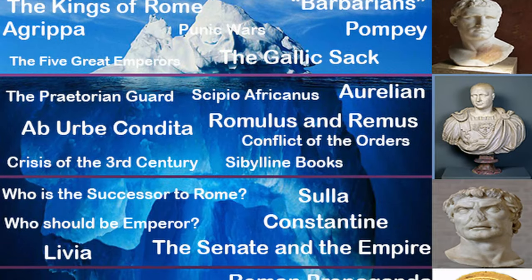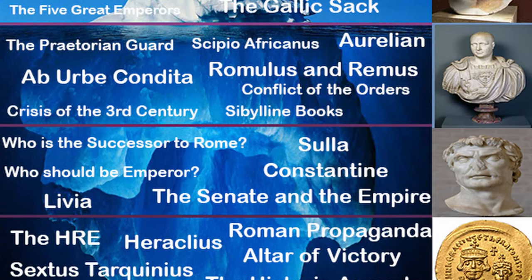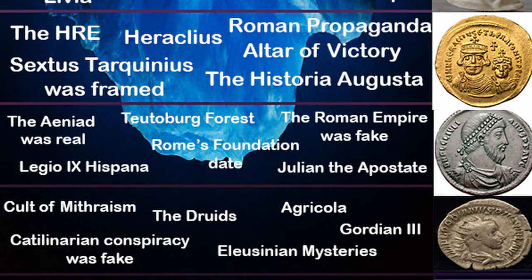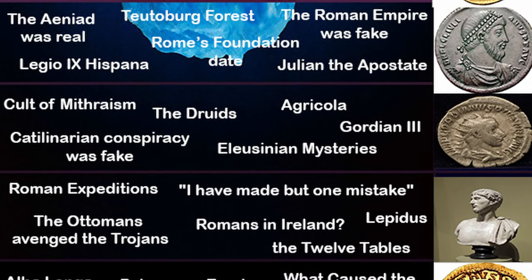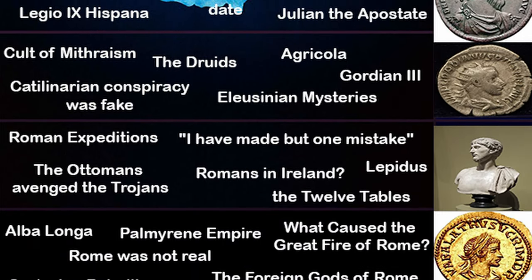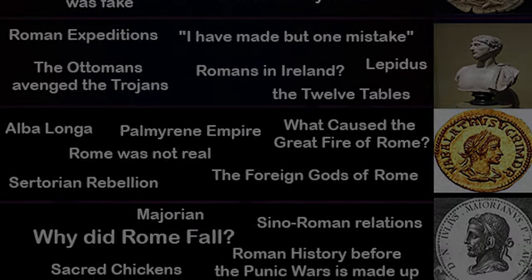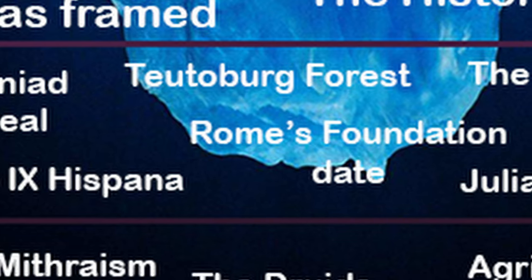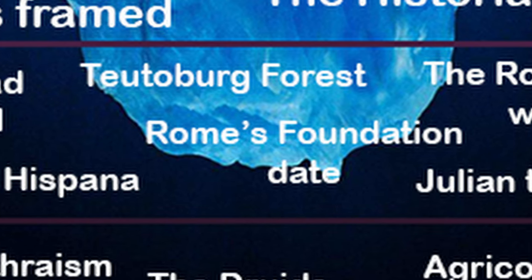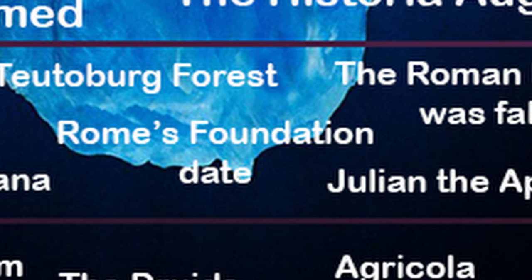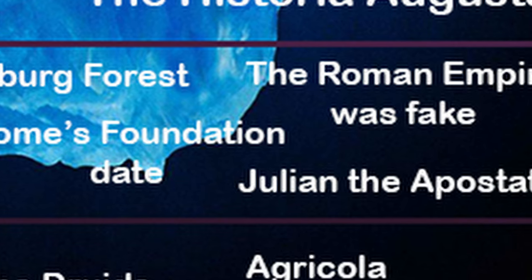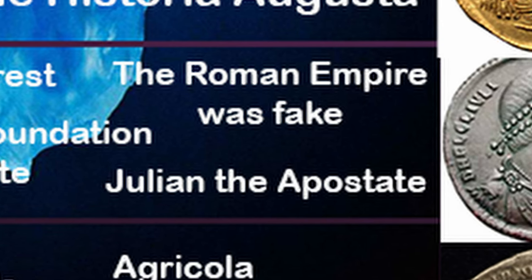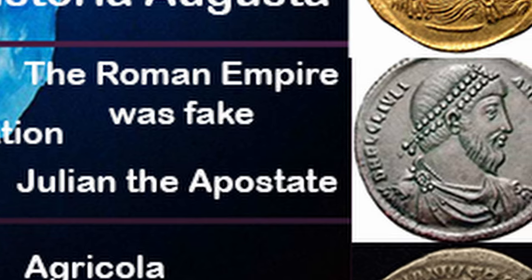Welcome to the fifth part of the Ancient Roman Iceberg. If you haven't seen the previous parts, I would definitely recommend you go check those out, as they cover some things that we are going to get deeper into in this episode. We start on the sixth tier of the Roman Iceberg, which is mostly dedicated to some interesting theories, along with some aspects of Rome's founding. This tier is represented by Julian the Apostate, who is quite possibly my favorite Roman Emperor.